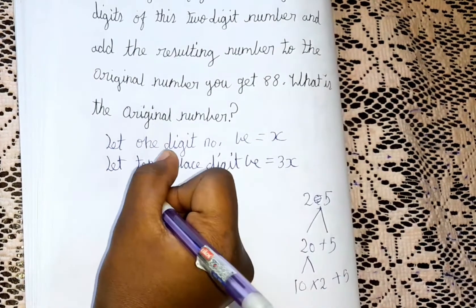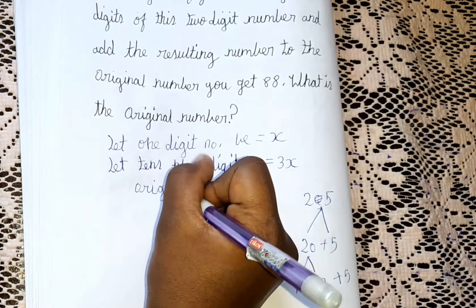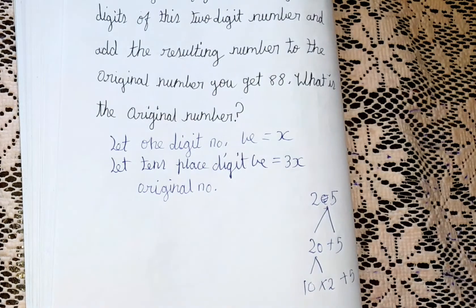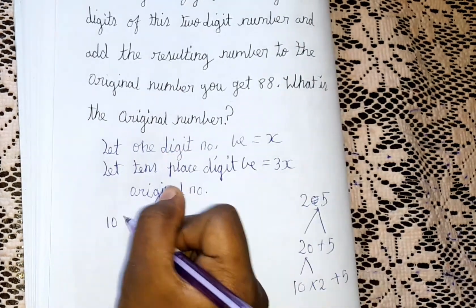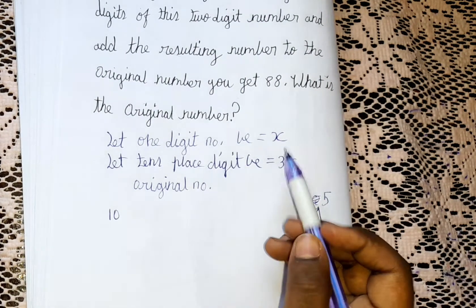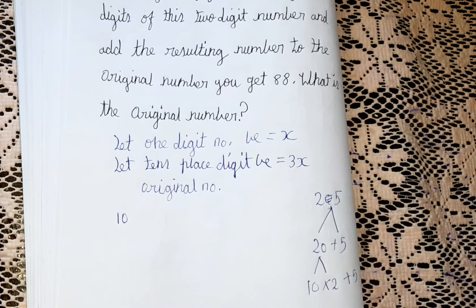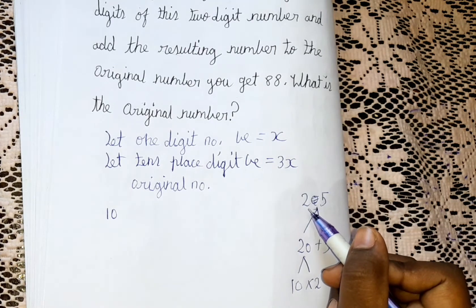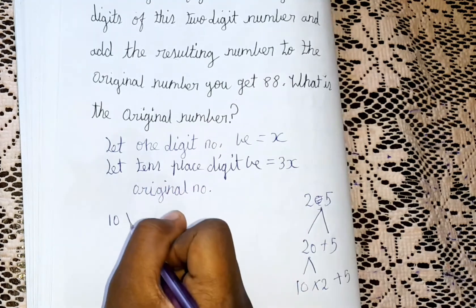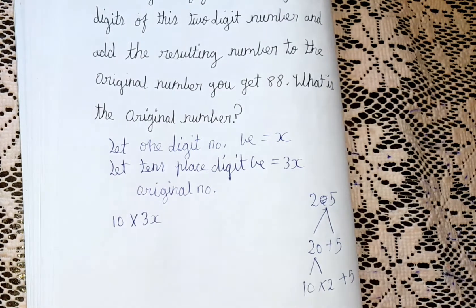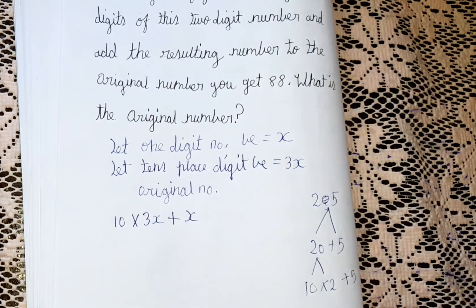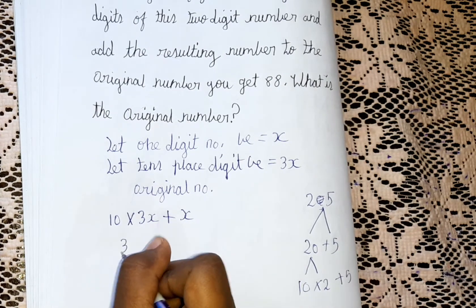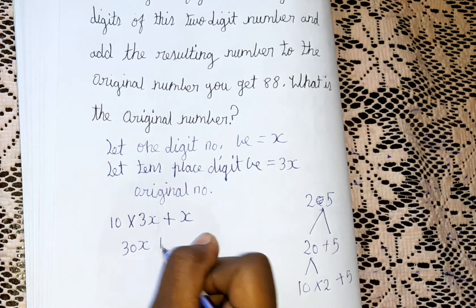Let's write the original number. Following the same method, we write 10 times the tens place digit. The tens place digit is 3x, so we write 10 into 3x. Then we add the ones place digit, which is x. So the original number is 10 into 3x plus x.